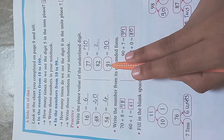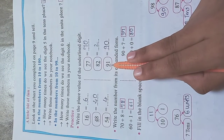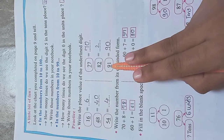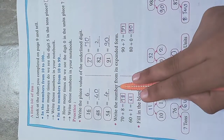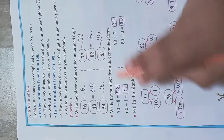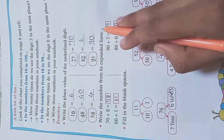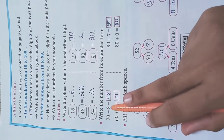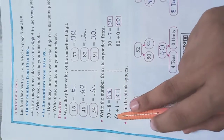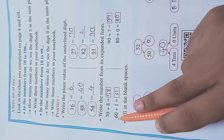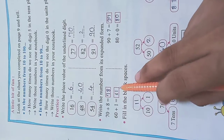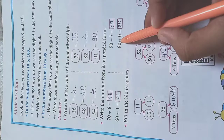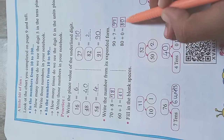The number 91 has digit 9 underlined. The place value of 9 is 90. Now, write the number from its expanded form. They have already given the expanded form and we add to find the real number: 70 plus 8 is 78; 60 plus 1 is 61; 90 plus 7 is 97; 80 plus 0 is 80.